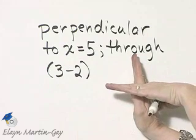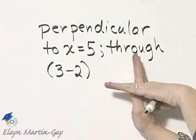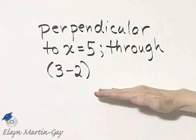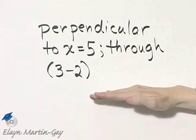Well, a horizontal line is perpendicular to a vertical line. So we want to write the equation of some type of horizontal line.